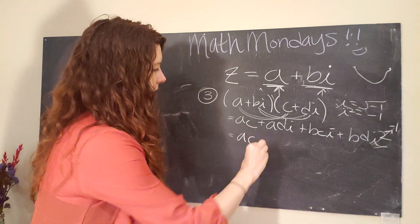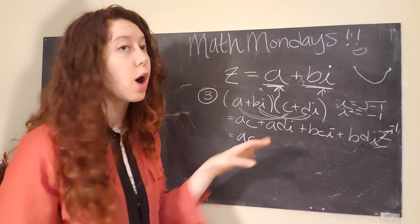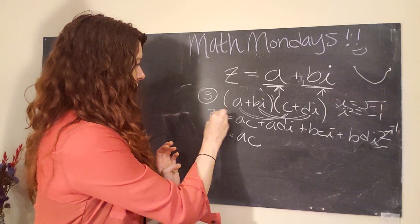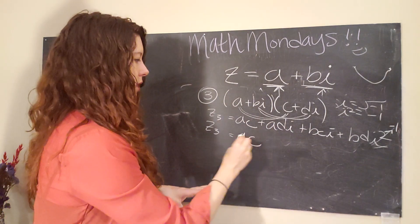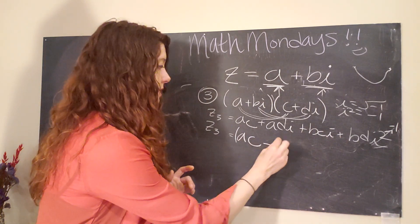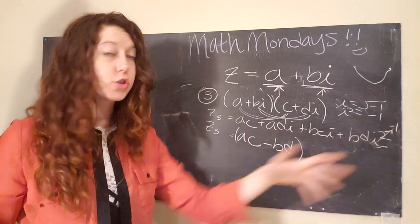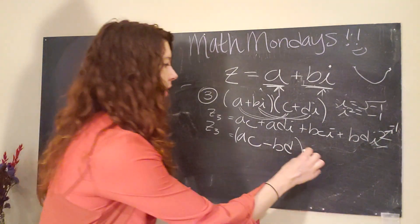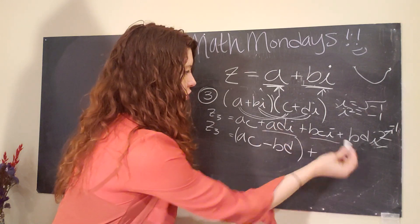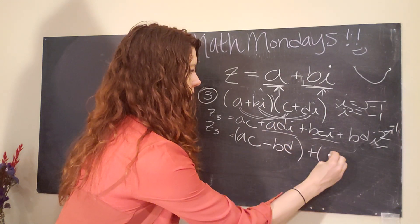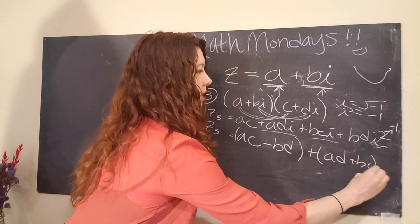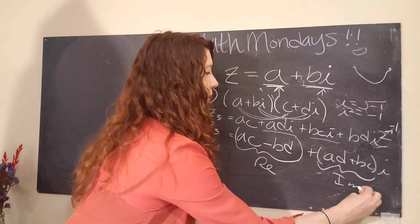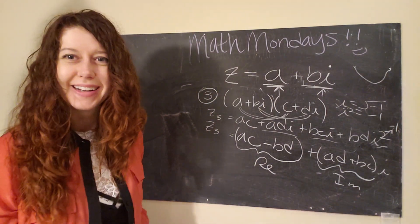So now we have ac. What we're doing now is we're going to combine the real parts of Z3 and the imaginary parts of Z3. So first we have ac minus bd, because that i squared turned into a negative one. So now we have negative bd. And then we add the imaginary parts together: plus ad plus bc times i. And this is the real part, and this is the imaginary part. Ta-da! Not so bad.